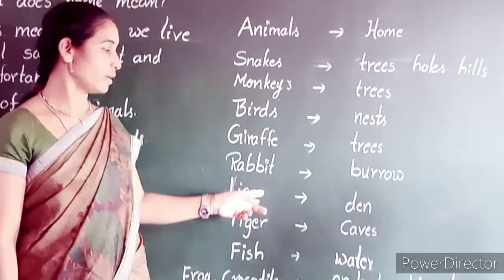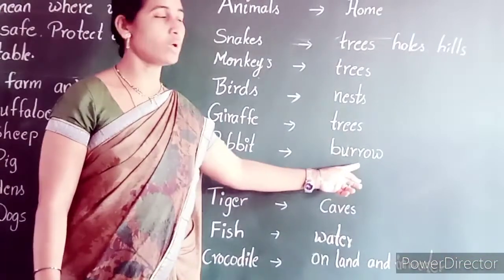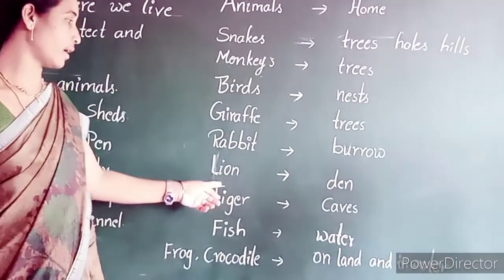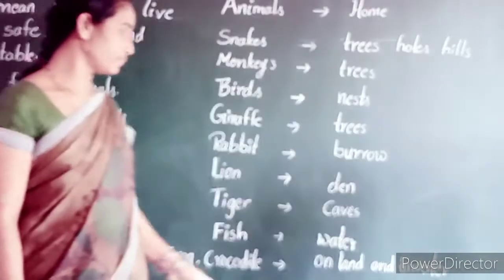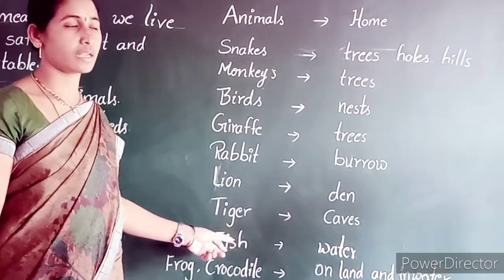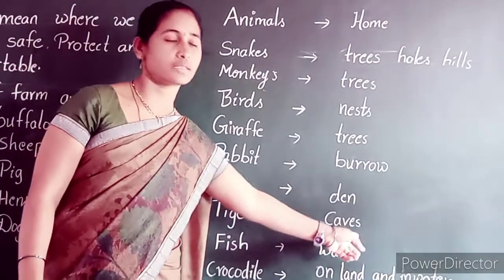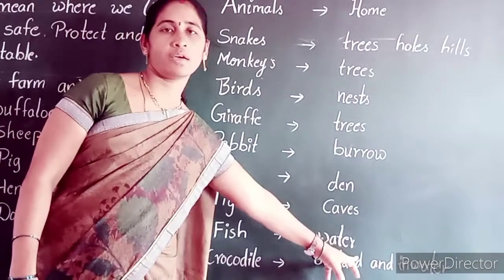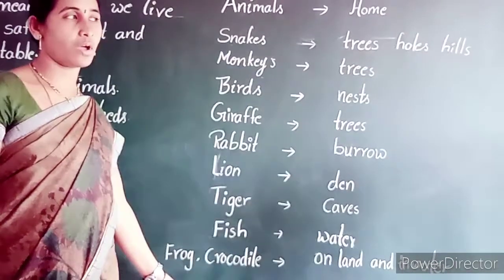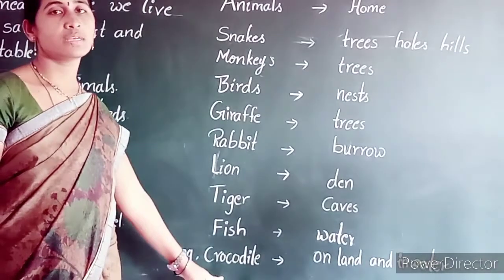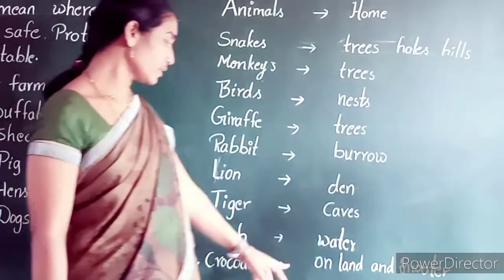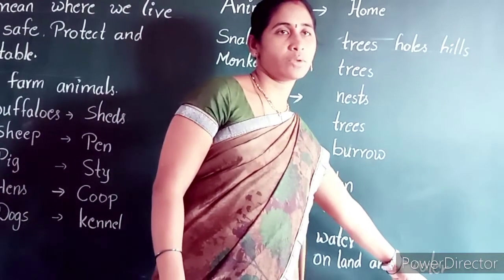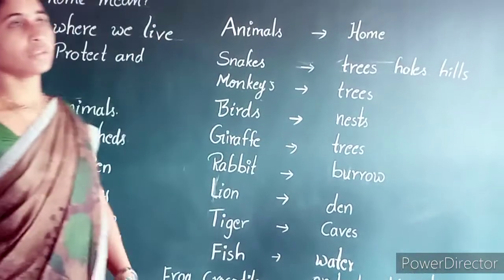Rabbit — R-A-B-B-I-T. Burrow — B-U-R-R-O-W. Lion — L-I-O-N. Den — D-E-N. Tiger — T-I-G-E-R. Caves — C-A-V-E-S. Fish — F-I-S-H. Water — W-A-T-E-R. Frog — F-R-O-G. Crocodile — C-R-O-C-O-D-I-L-E. Land — L-A-N-D. Water — W-A-T-E-R.